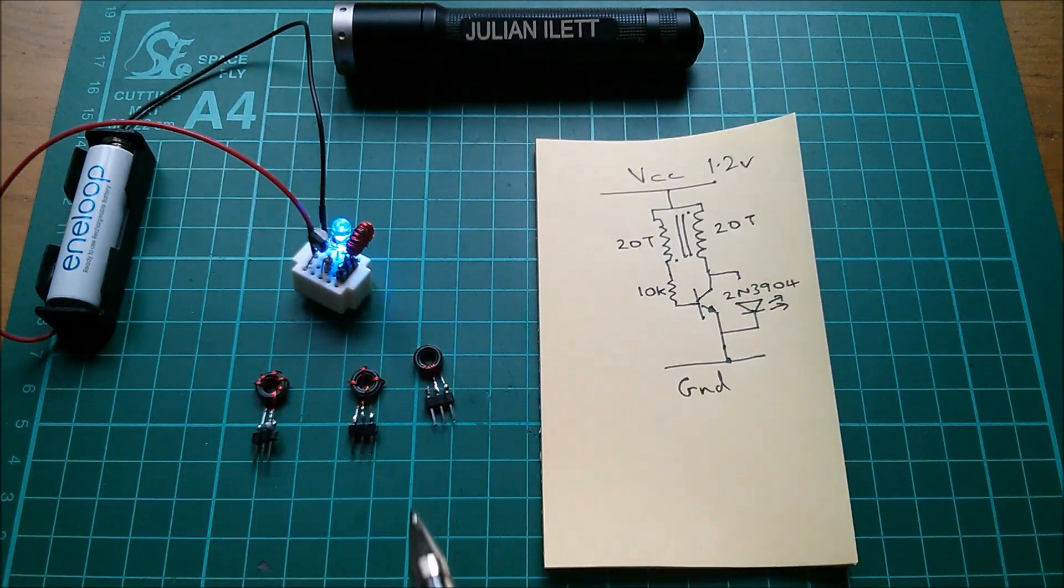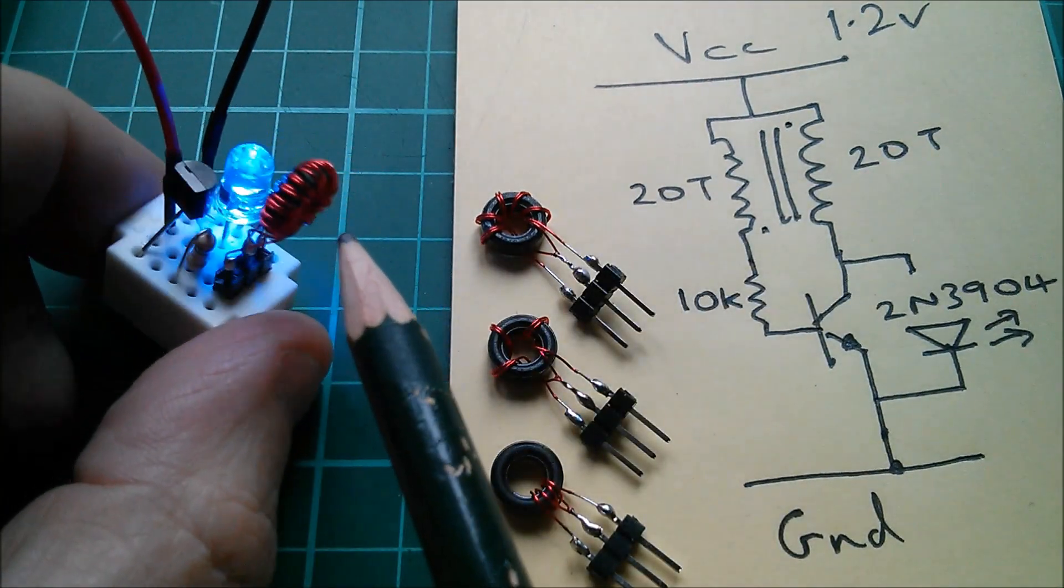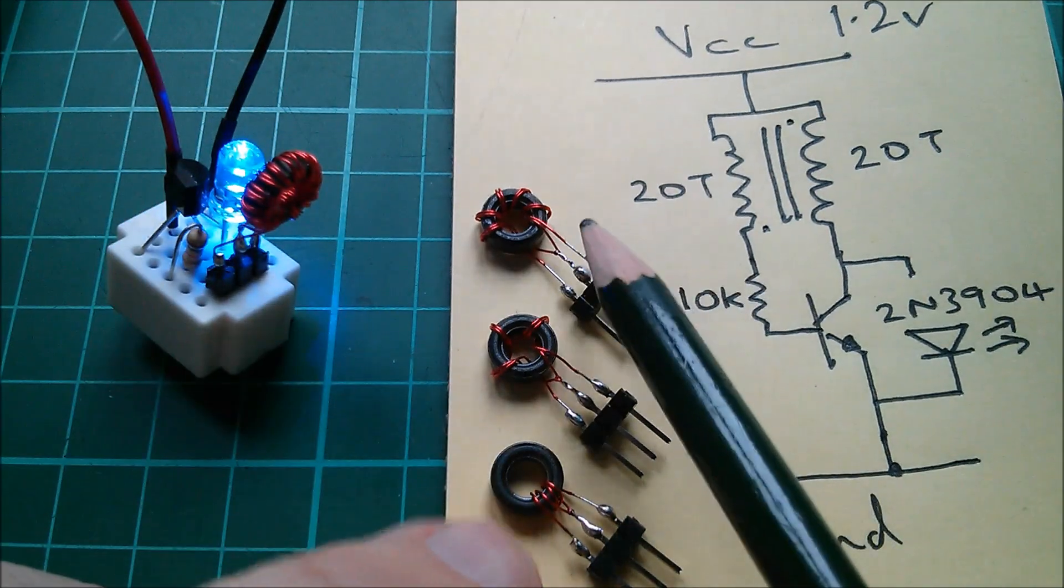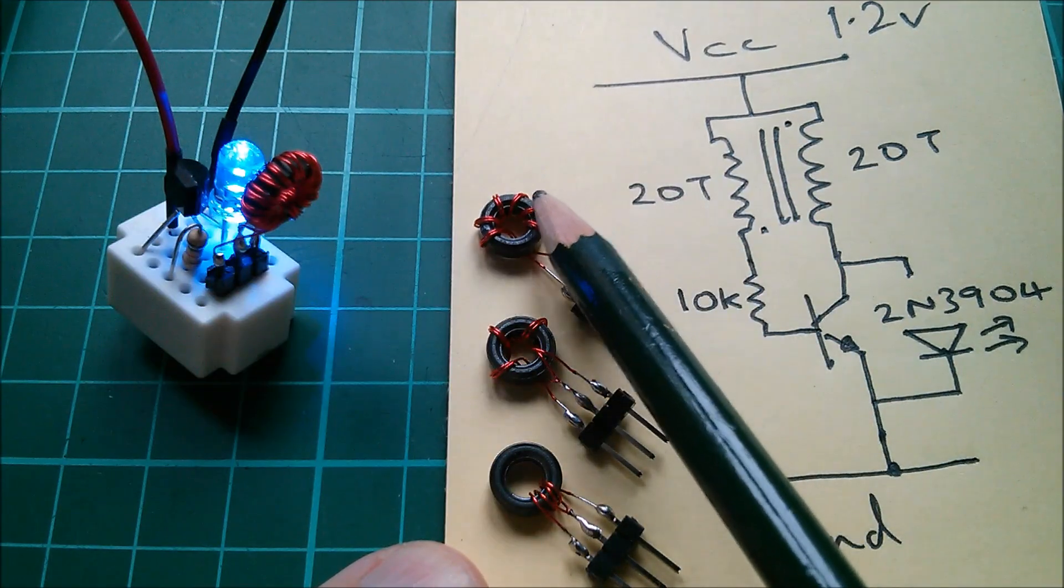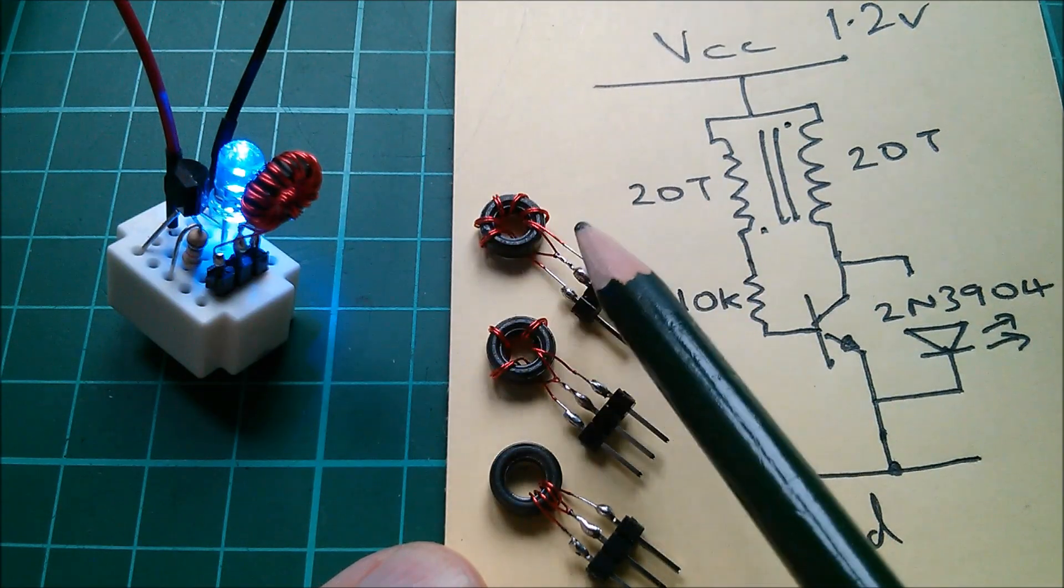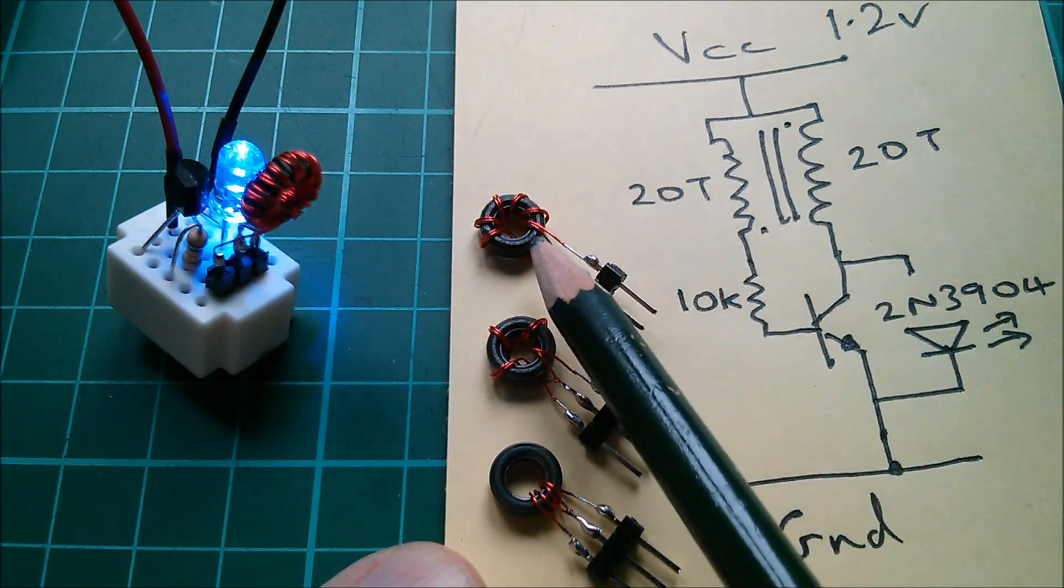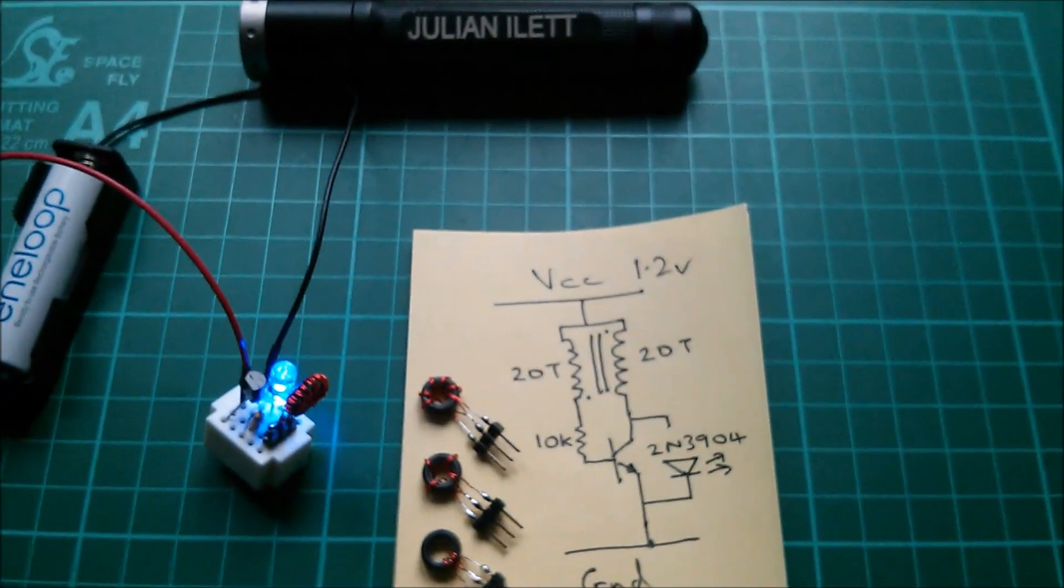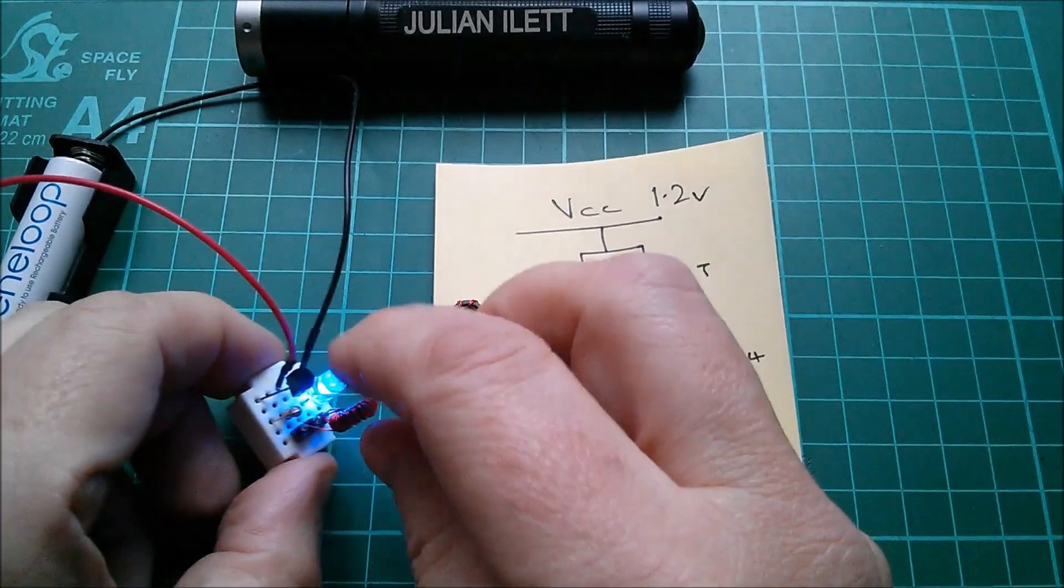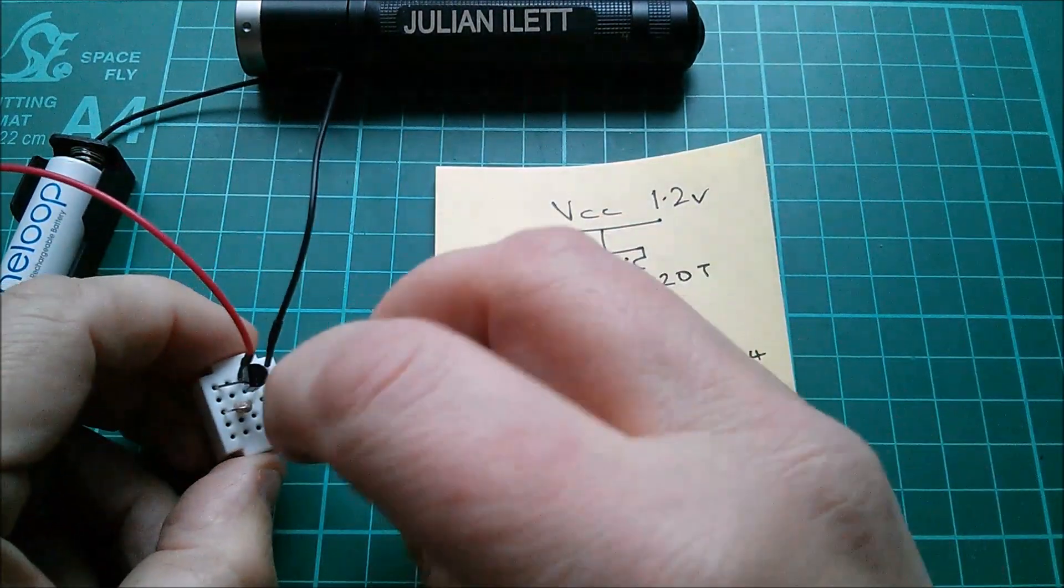Right, let's start by replacing the 20 plus 20 turns transformer in here with this one. This is six turns plus six turns. You can count, sort of one, two, three, four, five, but there's an additional kind of joining up at the bottom which I'm counting as the sixth turn. Let's put that one in. I'll bring the camera up a little bit so that we can see what's going on.